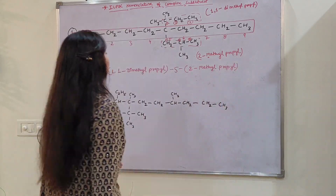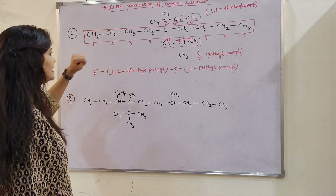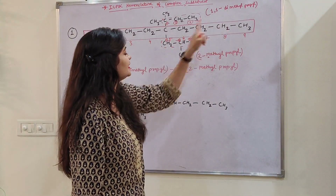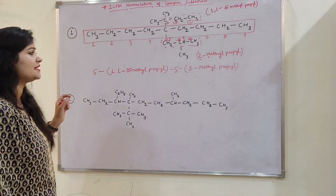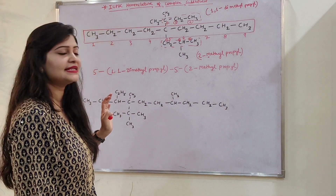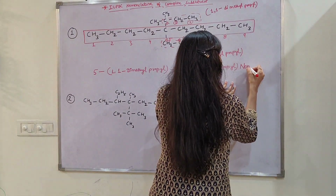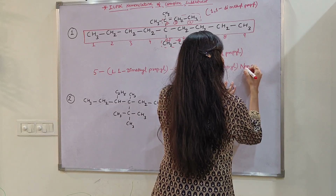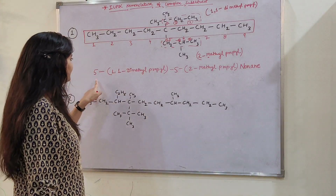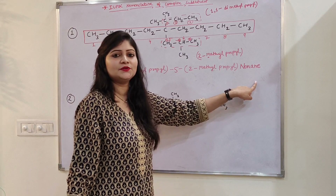Now for the last step: our parent chain has a total of 9 carbon atoms, and since it is a single bond, this is an alkane. With 9 carbons, the root word is 'non' and the suffix is '-ane', so this structure is named: 5-(1,1-dimethylpropyl)-5-(2-methylpropyl)nonane.